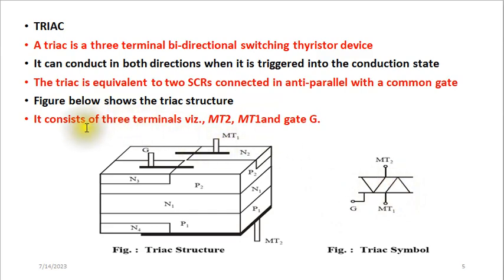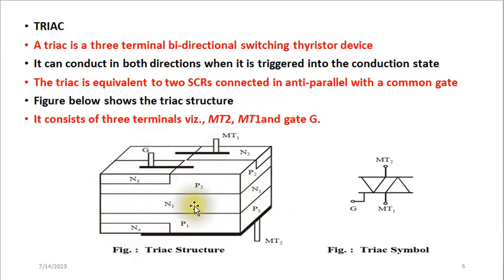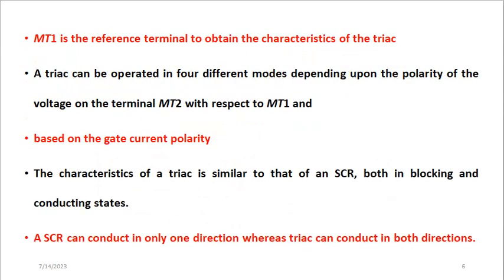The TRIAC consists of a combination of P and N type materials. As we can see here, we have layers P1, N1, P2, N2, P3, and N — this is a three-dimensional diagram of the TRIAC. MT1 is the reference terminal, and it is the one through which we supply our voltage, together with the current applied at the gate, in order to get the characteristics of the TRIAC.